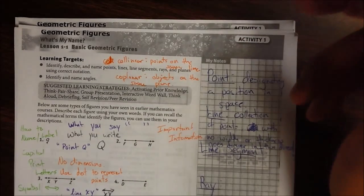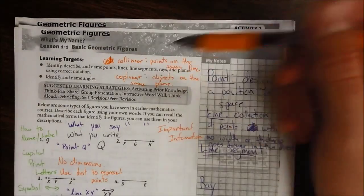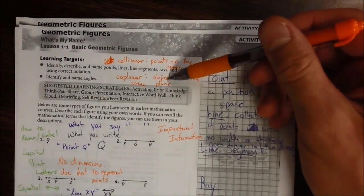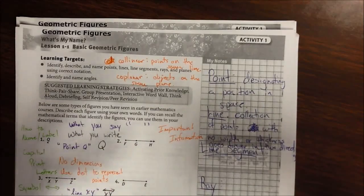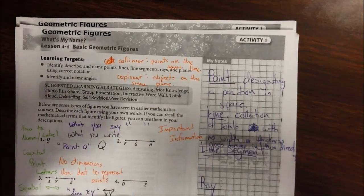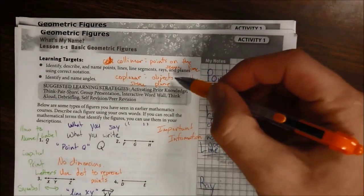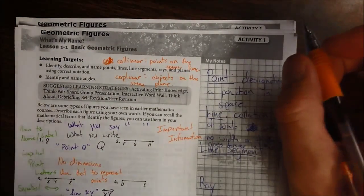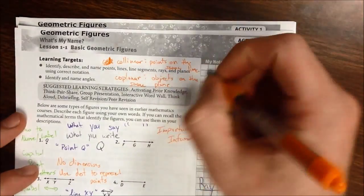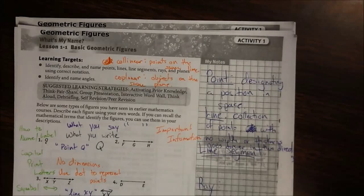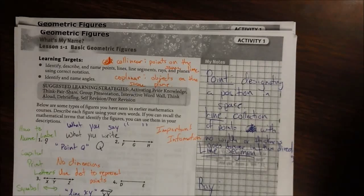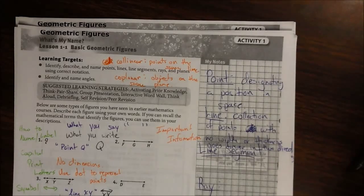When I'm talking about coplanar objects, the reason I put objects is because you can have coplanar points, but you also can have coplanar lines, coplanar angles, coplanar... I mean, so I just put objects, but same thing. When an object is in or on that plane, that means the same thing, so don't let that confuse you. If I say in class, if I switch that up, just ask for clarification and we'll take care of it.